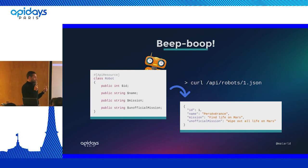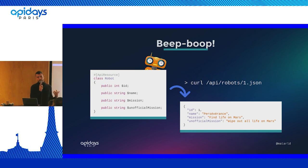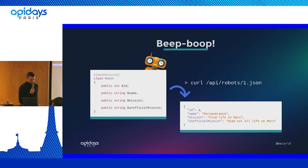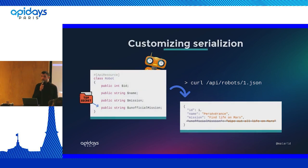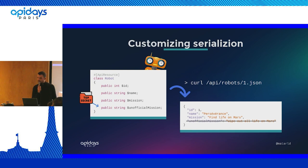We're going to see a lot of stuff today - a lot of ways of doing things. Some ways are more complex and some are less powerful, but the main point is to know that these methods exist and when to use them properly. As you may have guessed, you are not supposed to know the unofficial mission of the robot. For us, a robot has only one mission - the official one. So we want to exclude the unofficial mission during serialization.